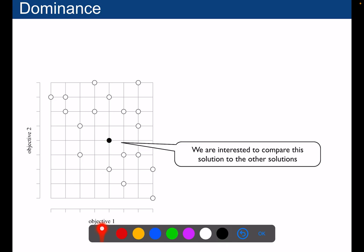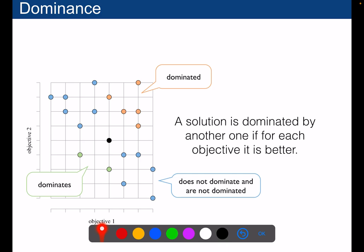Consider the solution represented in black. You will probably agree that this solution may be less good than this one, because this one is both better in terms of objective 1 and objective 2 compared to that solution. The green points are also better than the black one because they are better from the point of view of objective 1 and objective 2. And this one is equally good in terms of objective 1 and better in terms of objective 2, so we may also say that this one is preferable compared to the black one.